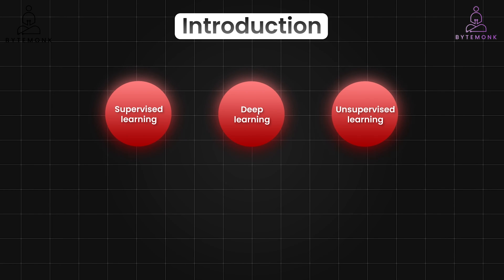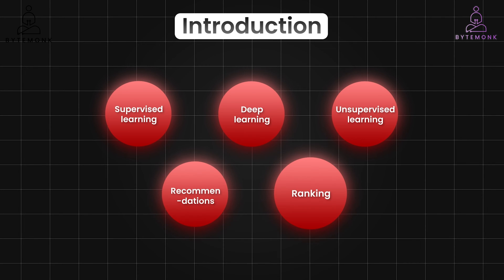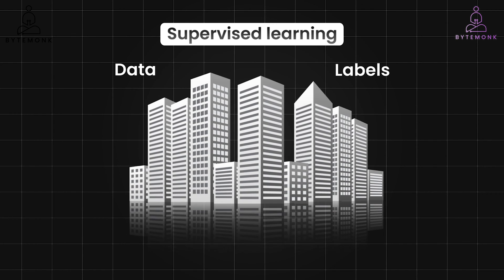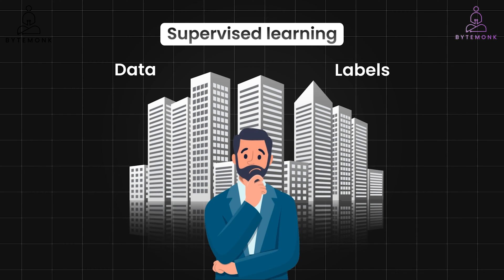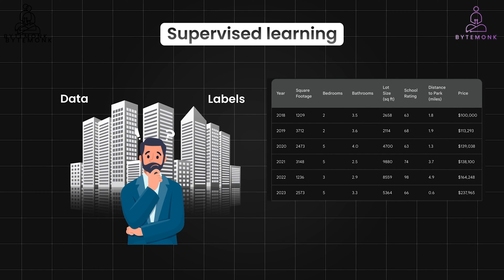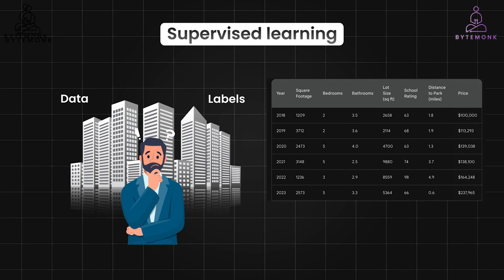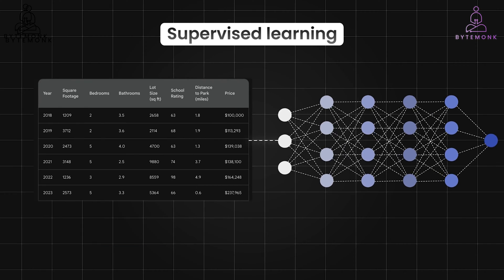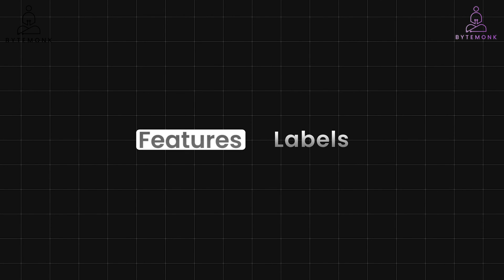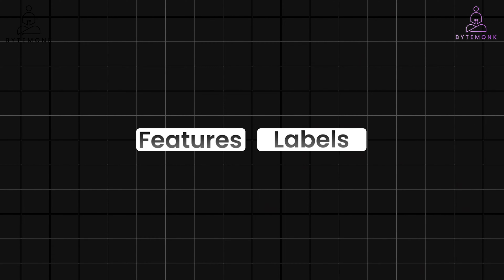Welcome to the Machine Learning Crash Course. In our previous video, we delved into predicting real estate prices, emphasizing the importance of labels in training models, particularly in supervised learning scenarios. In this video, we are revisiting the real estate example but will focus on understanding features and labels in depth.